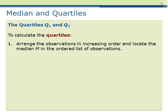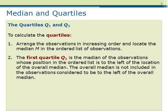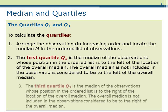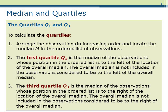To find the quartiles, we go through the following process. First, arrange the observations in increasing order and locate the median M. The first quartile Q1 is defined to be the median of the observations to the left of the median M. The third quartile Q3 is defined to be the median of the observations to the right of the median M. If there is an odd number of observations, do not include the original median in either half when finding the quartiles. If there are an even number of observations, simply divide the ordered list in half when finding the quartiles.